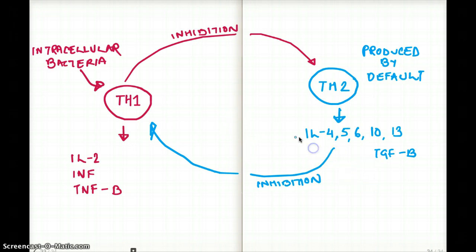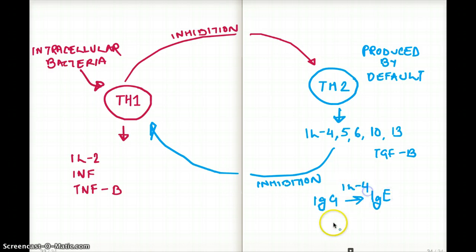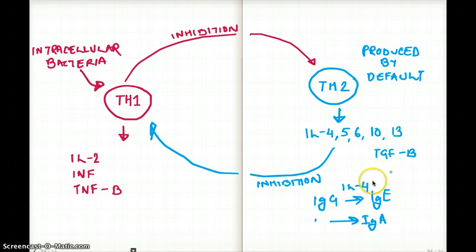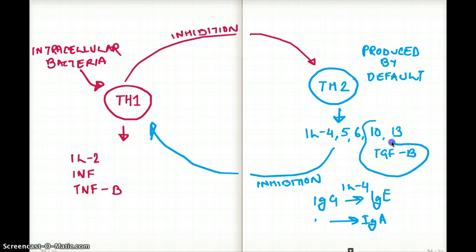T helper 2 is creating interleukins like IL-4, which converts IgG to IgE. It's creating IL-5, which is making IgA. It's creating TGF-beta, which has anti-inflammatory properties. IL-10 also has anti-inflammatory properties, so both TGF-beta and IL-10 have anti-inflammatory properties.